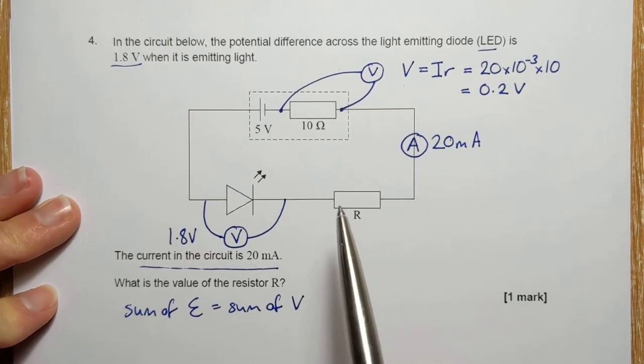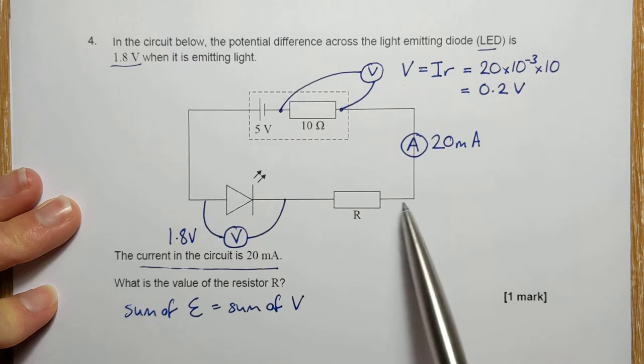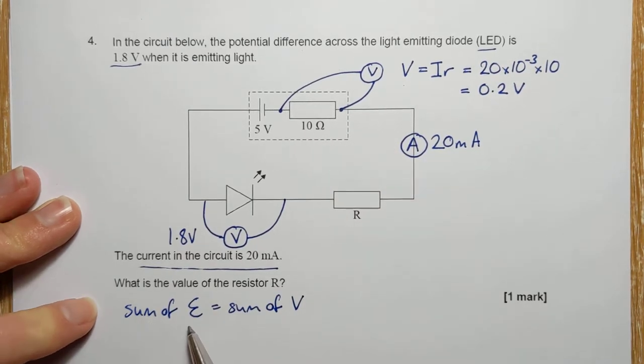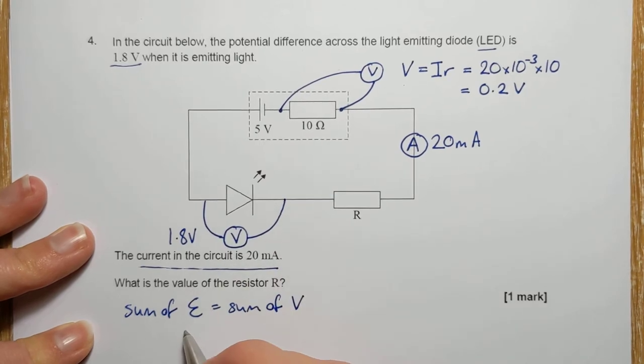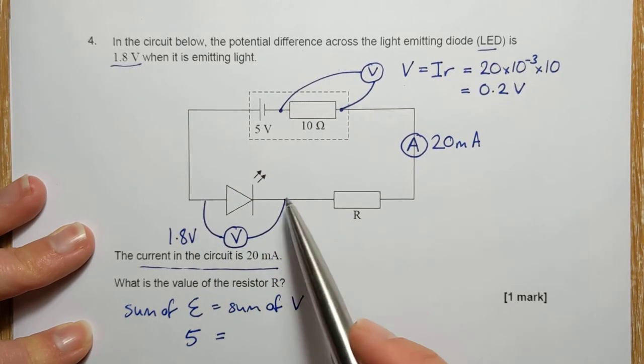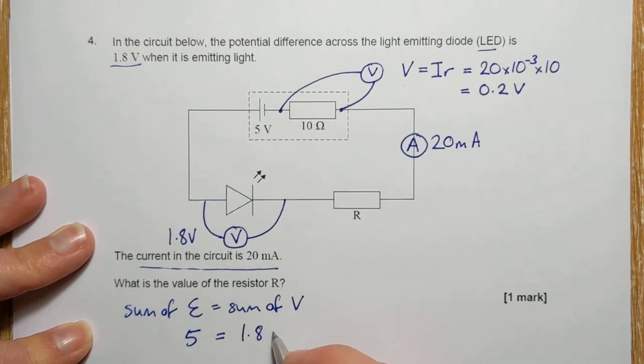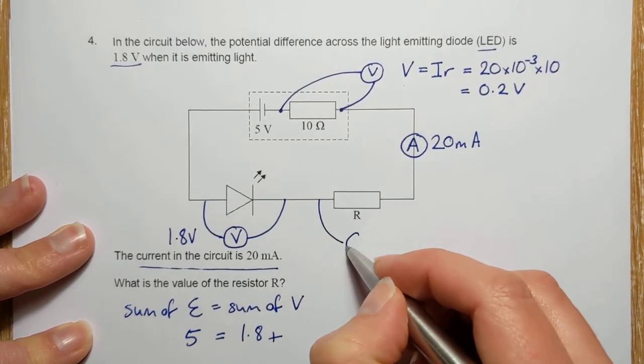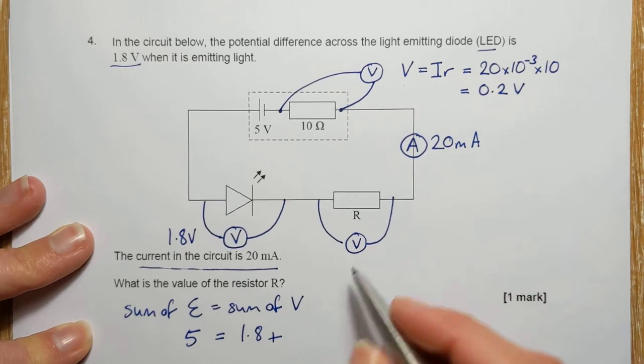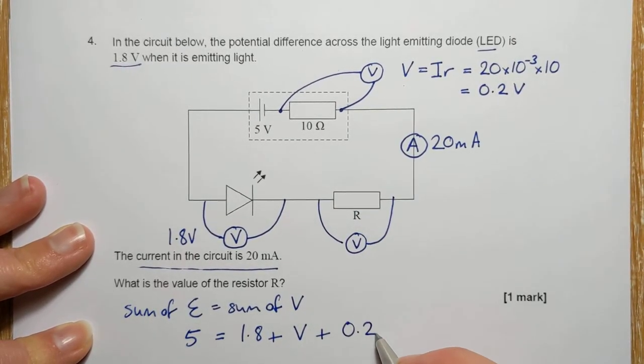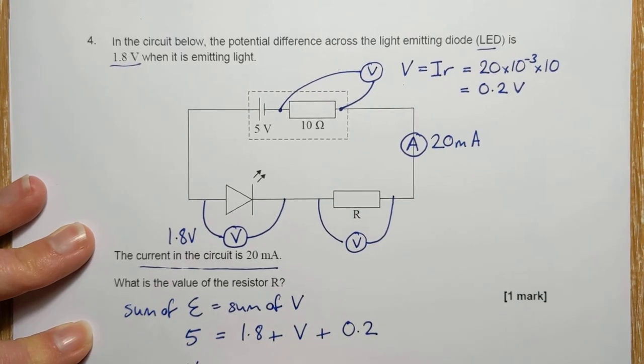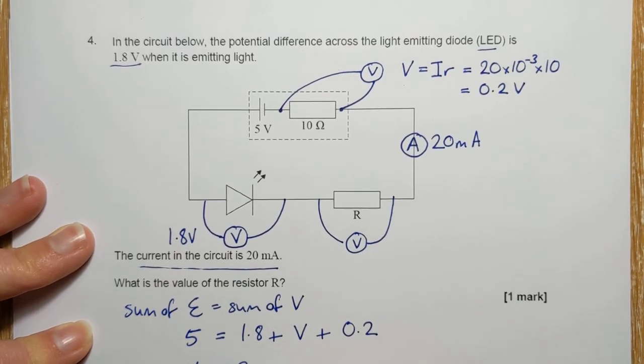So now I'm going to use Kirchhoff's second law. So round this loop, the sum of the EMFs has to equal the sum of the PDs. There's only one source of EMF, so the sum of the EMFs is 5 volts. And then the sum of the PDs, we've now got 1.8 plus whatever this one is, which I'll just call V still, plus the 0.2 from there. And so that's going to give us that V is 3 volts.